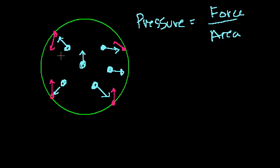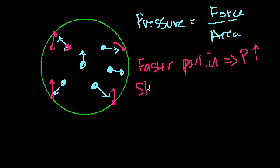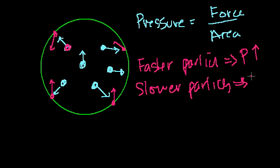So first of all, the faster these particles move, the higher the pressure. Faster particles would imply pressure would go up. Slower particles, you're going to be bouncing into the container less, and when you do bounce, it's going to be less of a ricochet or less of a change in momentum. So slower particles, you're going to have pressure go down.